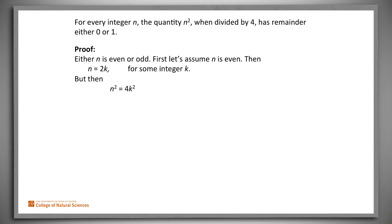But then n squared equals 4k squared, and n squared mod 4 equals 4k squared mod 4, which equals 0, since 4k squared is a multiple of 4.